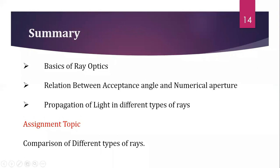Now let us summarize the topics we discussed today. We covered the basics of ray optics, the relation between acceptance angle and numerical aperture, propagation of light, and different types of rays. Based on today's class, I will assign a small task: compare the three types of rays and submit the comparison within two days. Hope you have understood. Thank you, dear students.